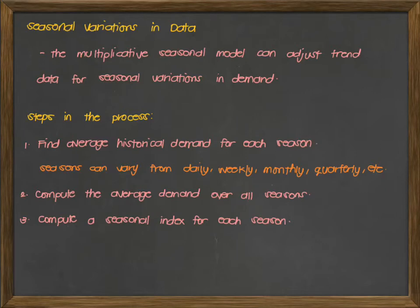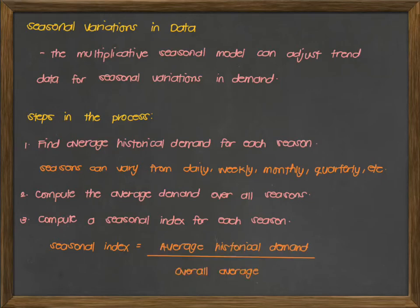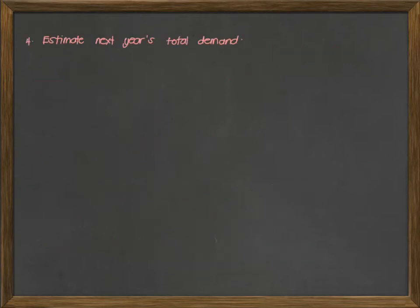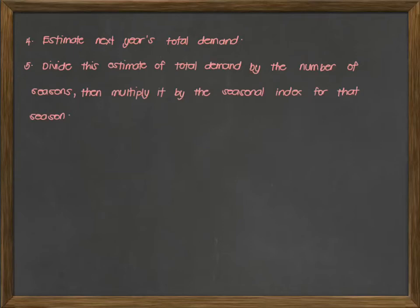Third is to compute a seasonal index for each season using the following formula. Seasonal index is equal to the average historical demand divided by the overall average. Fourth is to estimate next year's total demand, and lastly, divide this estimate of total demand by the number of seasons, then multiply it by the seasonal index for that season. Now take note that this particular step can be varying depending on the type of problem or what is stated in our problem.